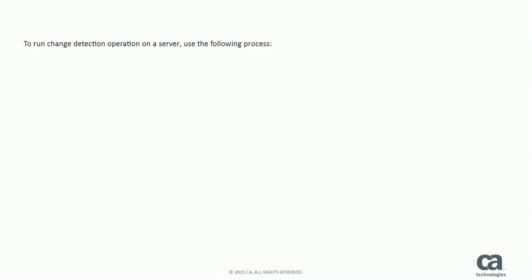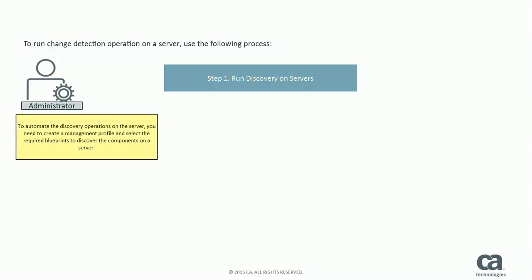To run a change detection operation on a server, use the following process. Step 1: Run Discovery on Servers. To automate the discovery operations on a server, you need to create a management profile and select the required blueprints to discover the components on a server.